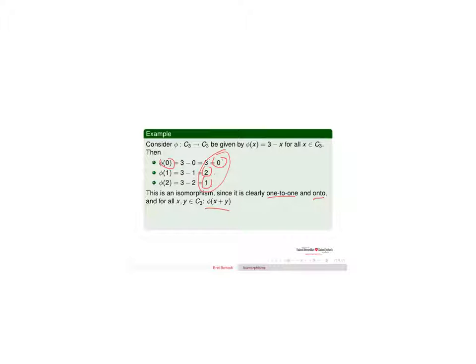And now we can test to see whether it's a homomorphism. Phi of x plus y equals negative x plus y mod 3, which equals negative x plus negative y mod 3. Since it maps C3 to itself, not only is it an isomorphism, it's an automorphism.